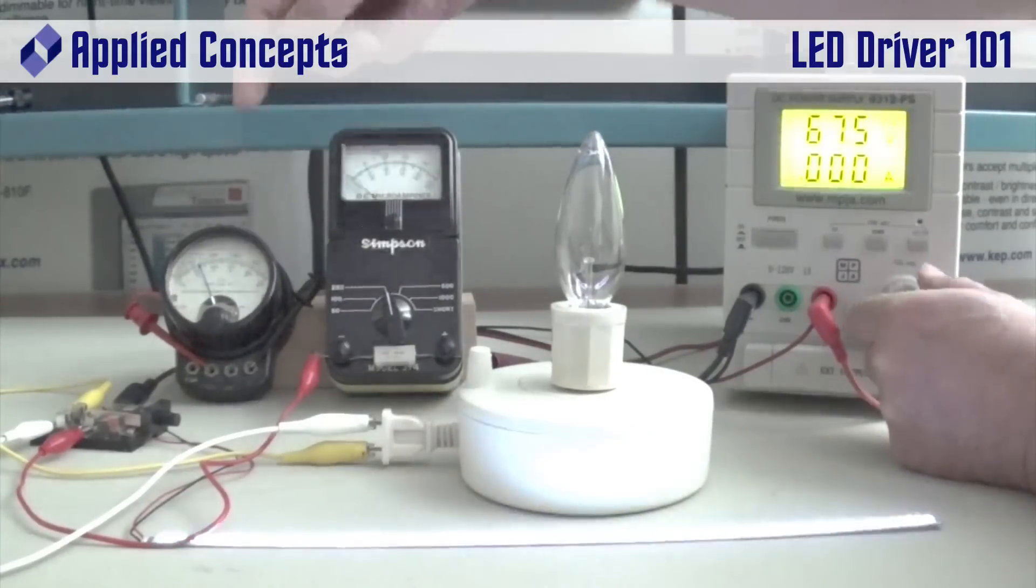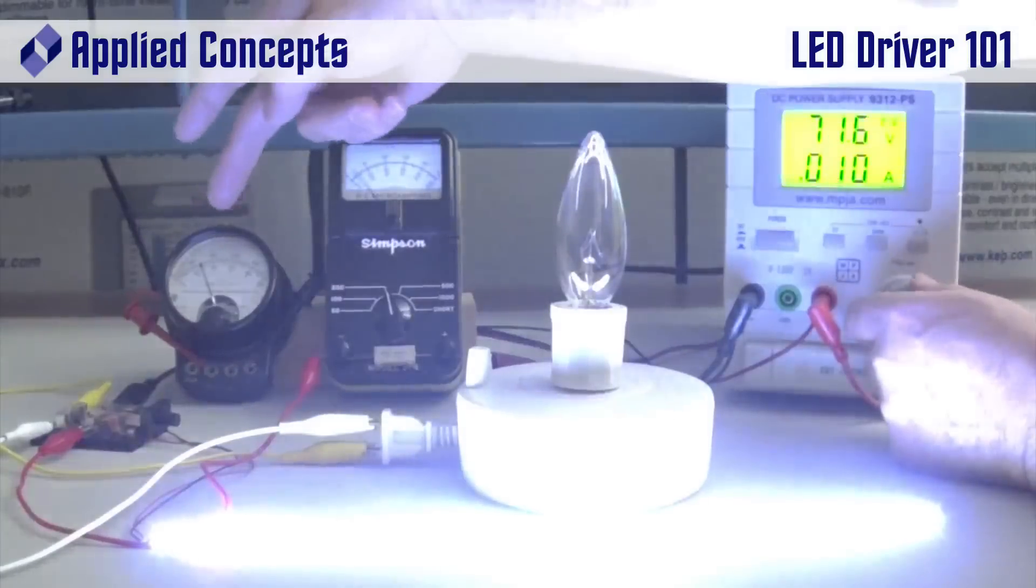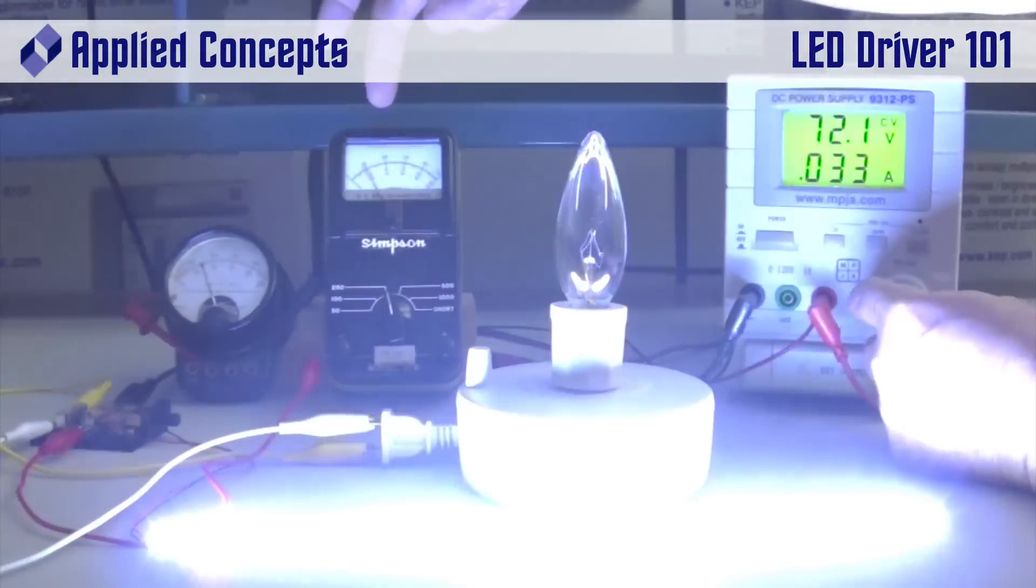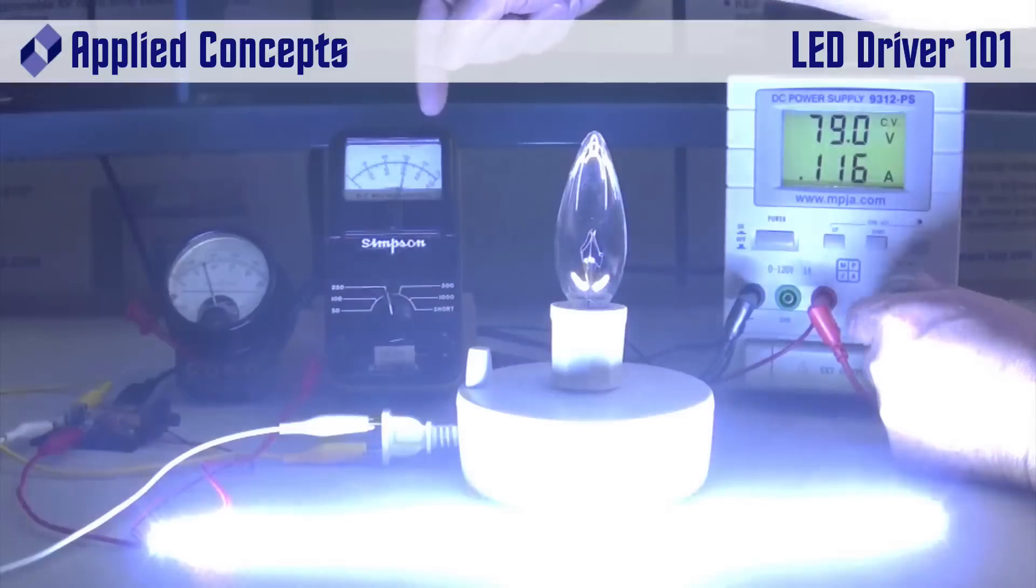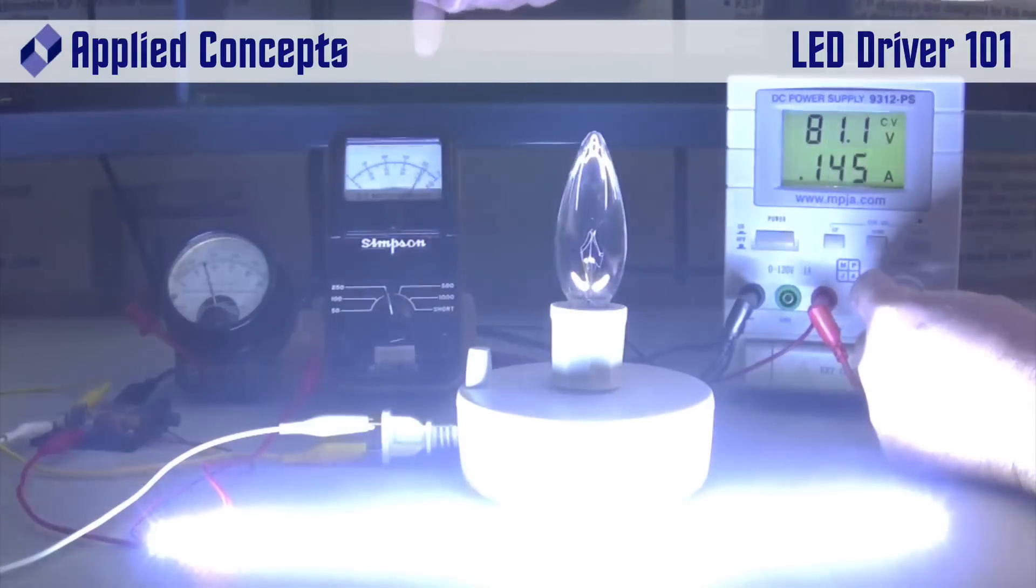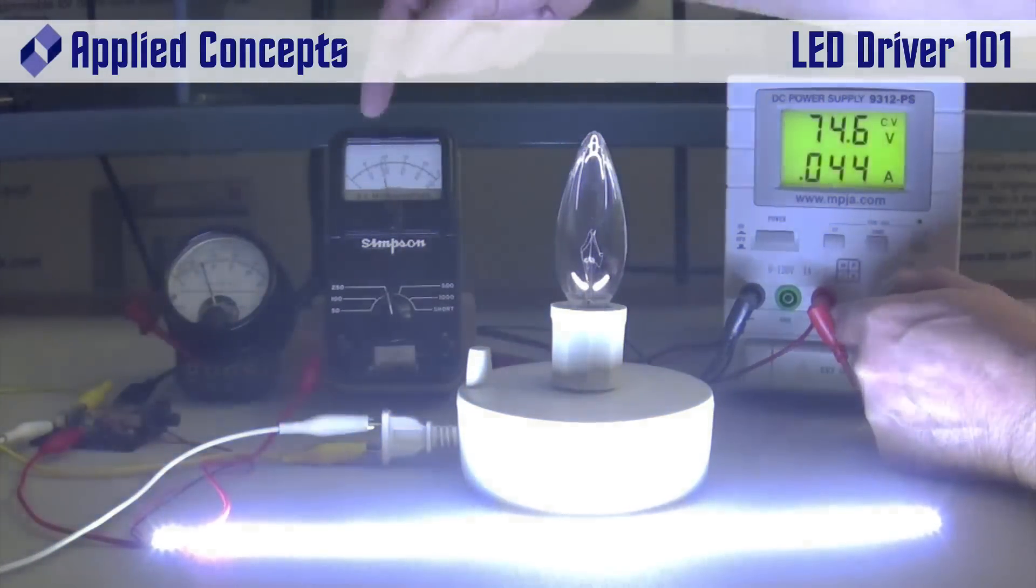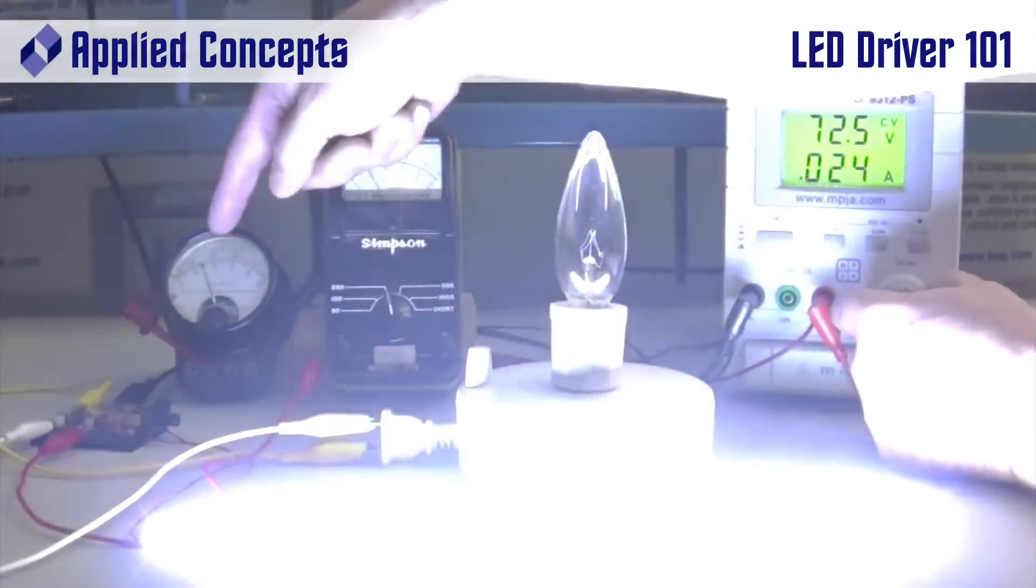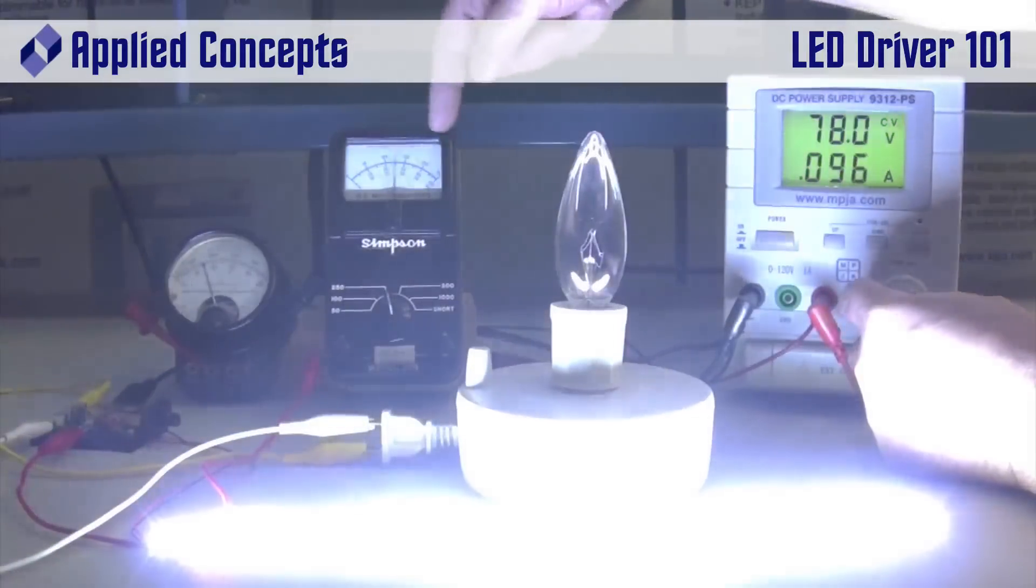you'll notice suddenly the LEDs start to come alive, and with very small changes in voltage, look at what the current's doing. It's increasing dramatically. So ultimately what you see here that's different from the light bulb is that very small changes in voltage result in very large changes in current.